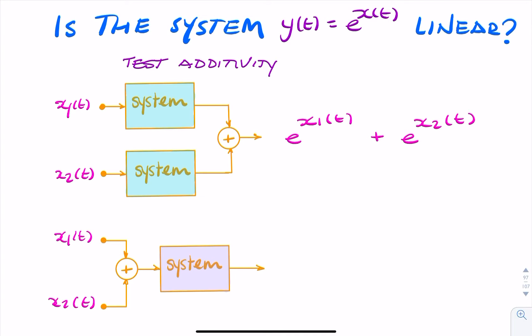Now I do the same thing, but this time I add the signals before entering into the system. So here I'd have x1(t) plus x2(t), and the output would be e to the x1(t) plus x2(t).